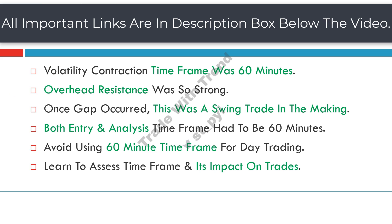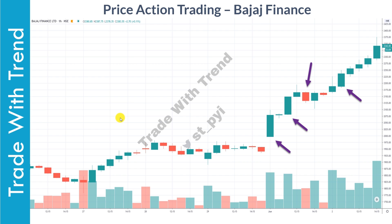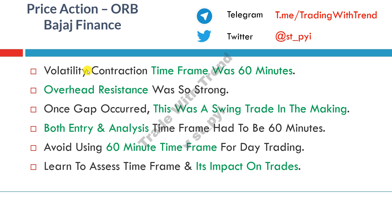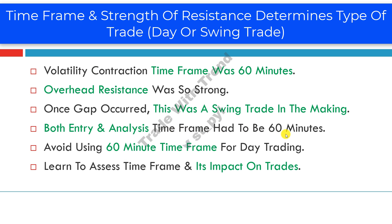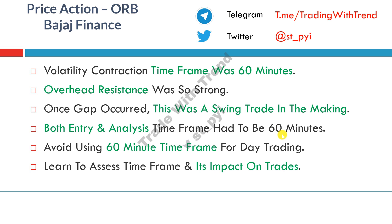The key thing to note in the Bajaj Finance trade was that the contraction pattern played out on a 60-minute timeframe chart, clear overhead resistance was visible, and once the gap occurred on the chart, this was a clear sign that this was a swing trade based on the resistance and the timeframe selection. This is a key point that many traders miss — in this trade, both the entry and analysis timeframe was 60 minutes. I hope you can now assess the impact of timeframe and resistance in identifying a swing trade.